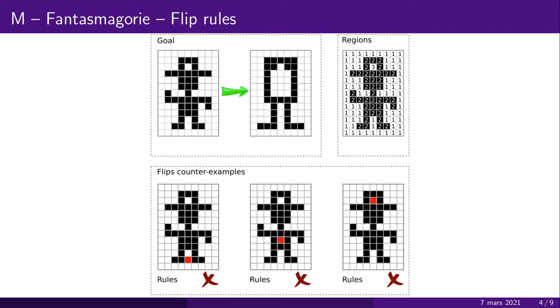The goal of the problem is to find a morphing from the first picture to the second one, in which you have to flip the colors of one pixel at a time, while still preserving the three constraints and maintaining the number of regions of each color. Here, you can't flip the green pixel because it would create a new zone.